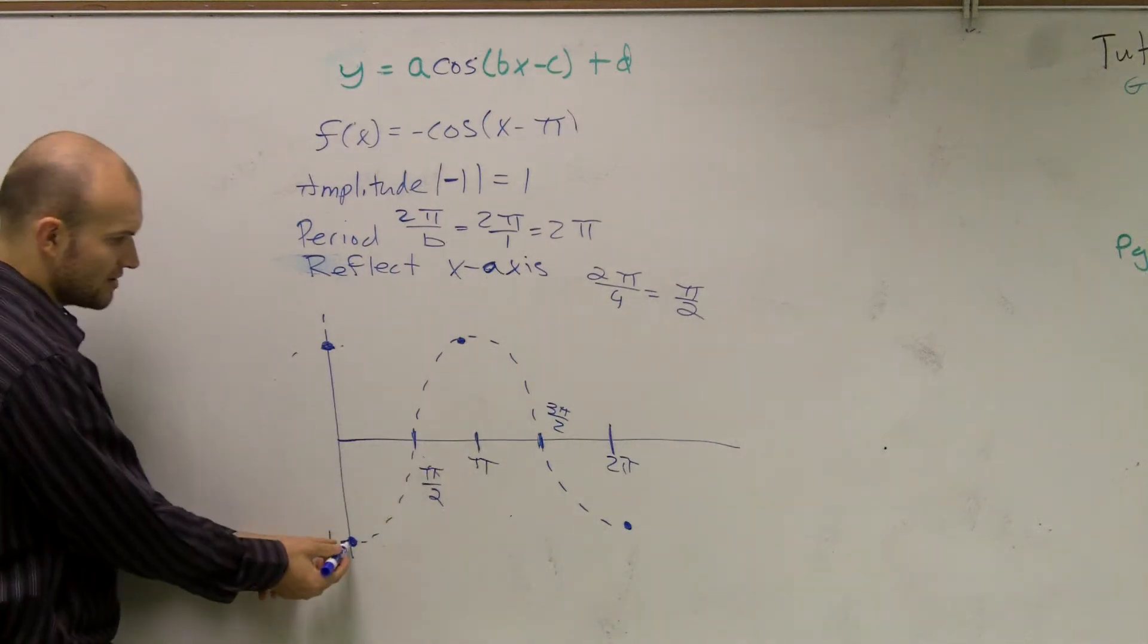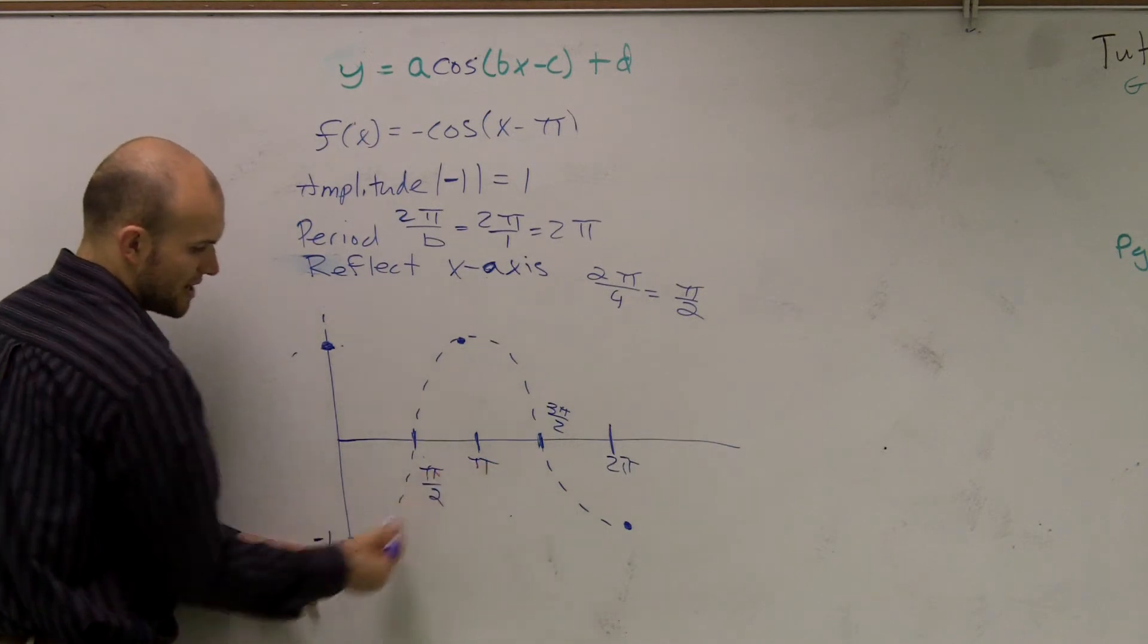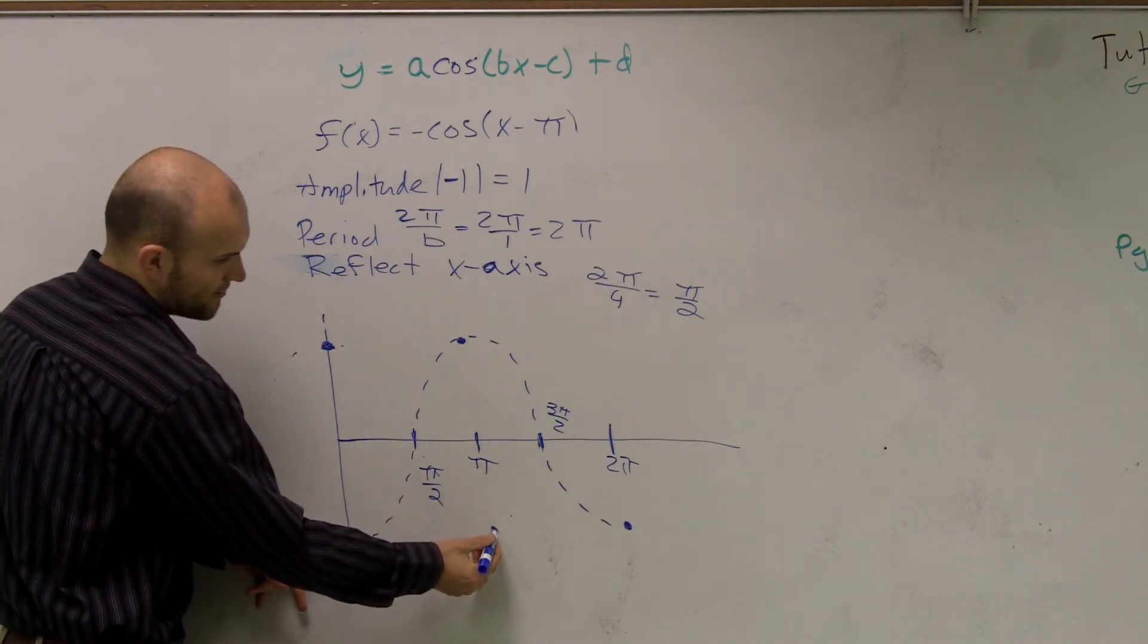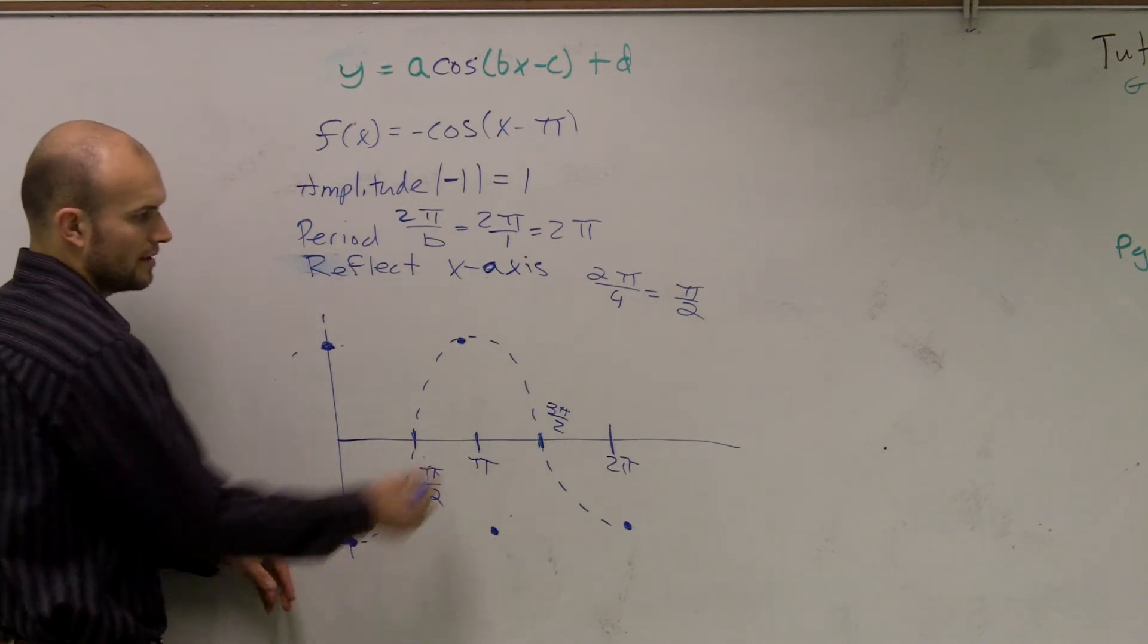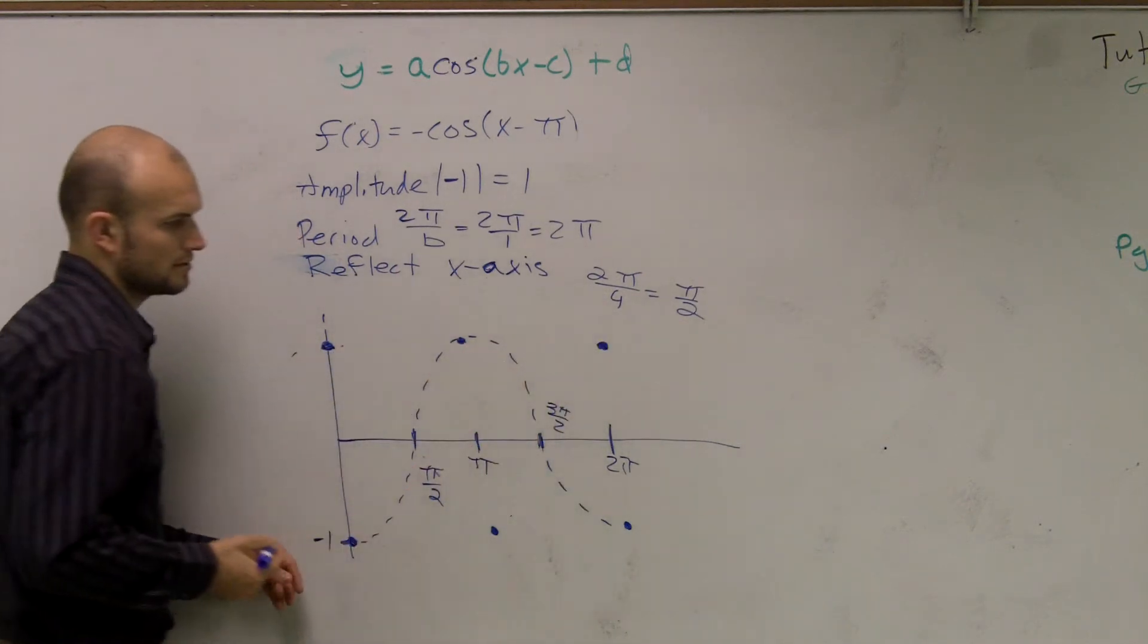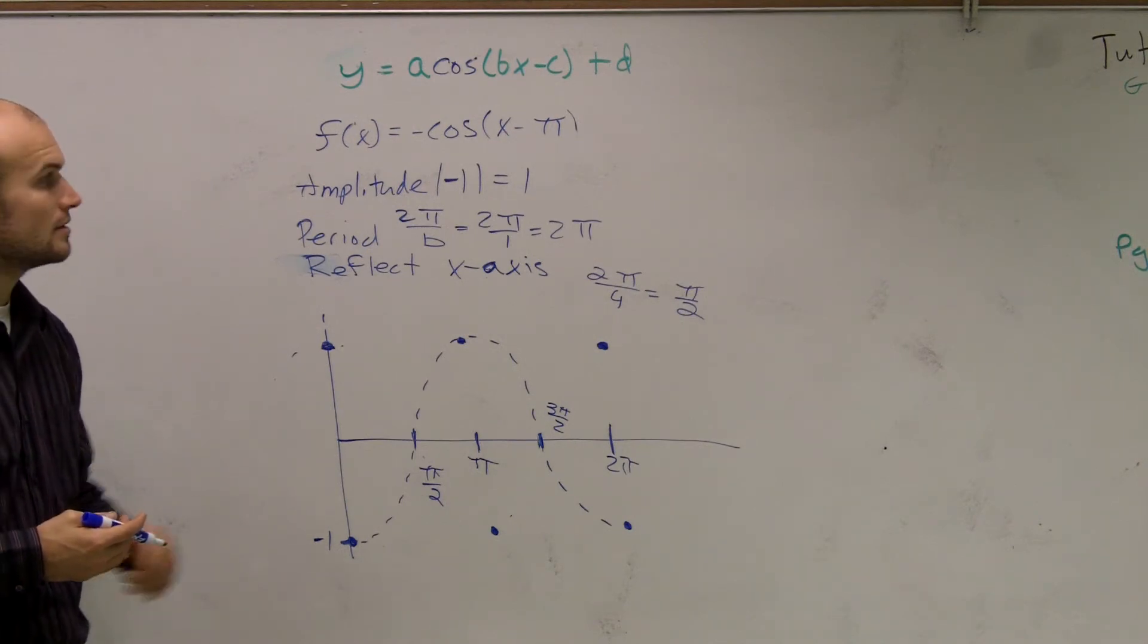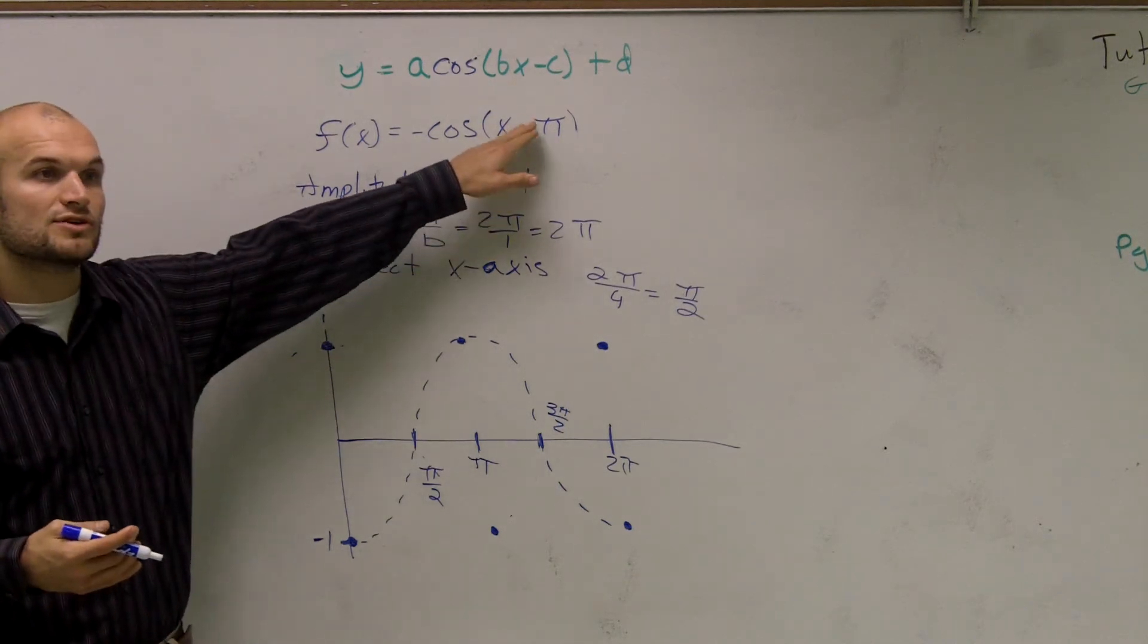So therefore, instead of this point being here, this point is now going to go π units to the right. So it's going to go over here. This point is going to go over here. Because, lookit, remember we have a horizontal translation.